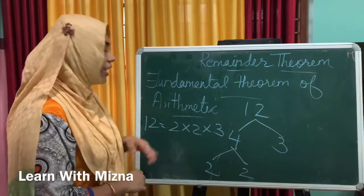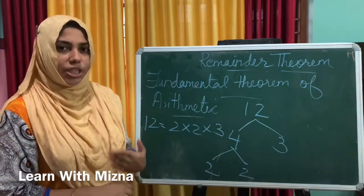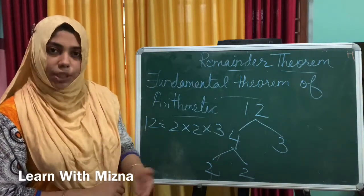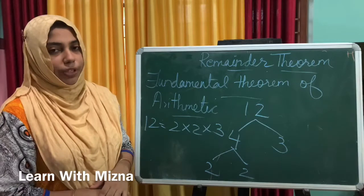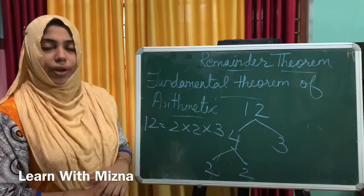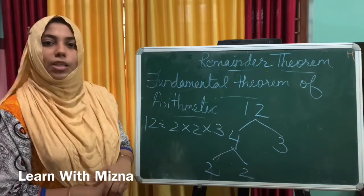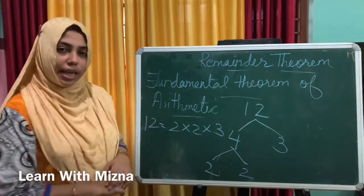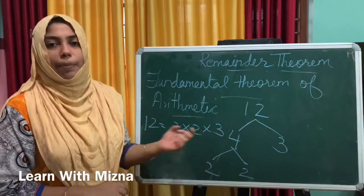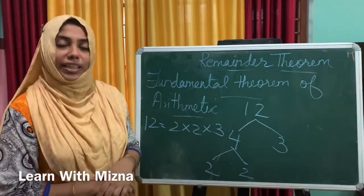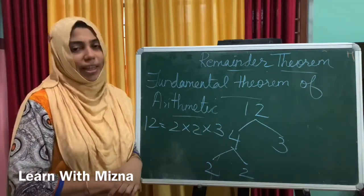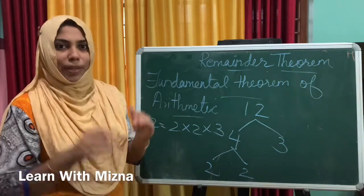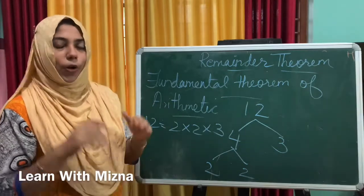Suppose 12 is the number — we call its factors: 2, 6, 12, and 4, 3. So 12 is a composite number. All composite numbers can be expressed as a product, just in a different pattern. This is our second exercise.